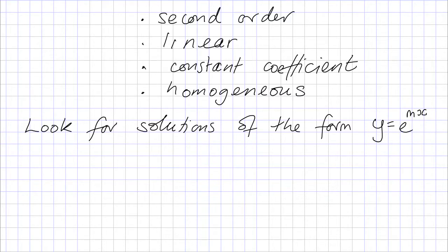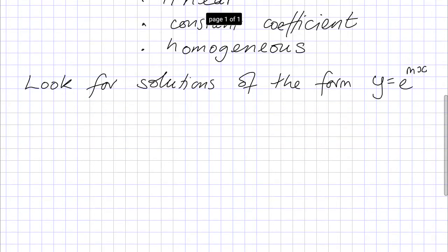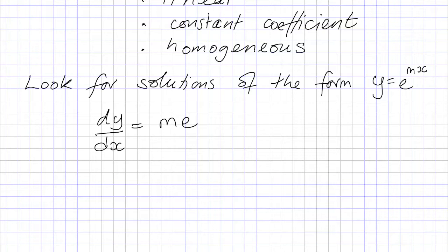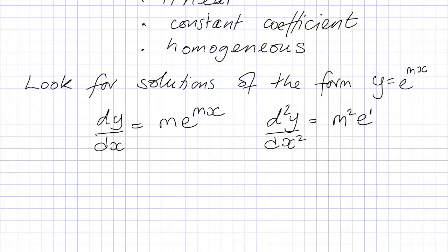So why is that a good idea? Well, if we look at the first derivative of this function, dy/dx: when we differentiate the exponential, we bring the m in the exponent down to the front, giving m times e to the mx. And if we build the second derivative, d²y/dx², the same thing happens and we get another m down the front, so this is m squared times e to the mx. Every time we differentiate, we get another power of m.